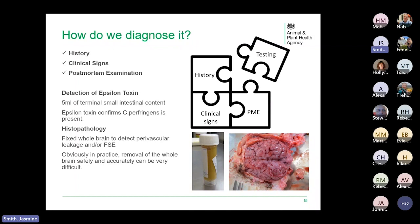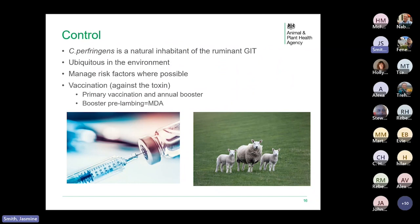In terms of control, Clostridium perfringens is a natural inhabitant of the GI tract and ubiquitous in the environment, so we're limited in controlling those aspects. We can manage risk factors where possible, though many are unavoidable. Thankfully, there is a vaccination available and it's very effective provided it's done correctly: a primary vaccination course followed by an annual booster, preferably just before lambing. Maternally derived antibody should last approximately three months and protect lambs from pulpy kidney disease.